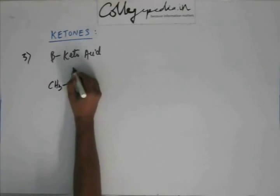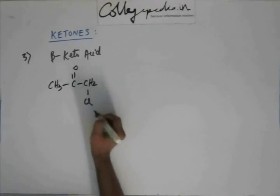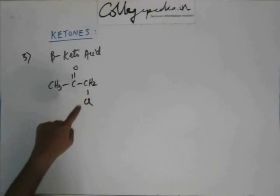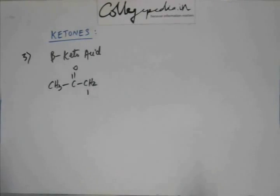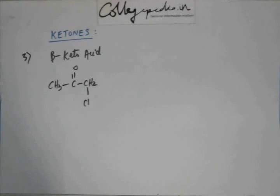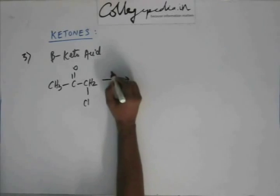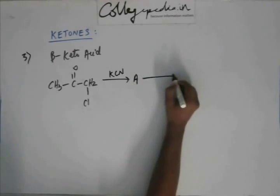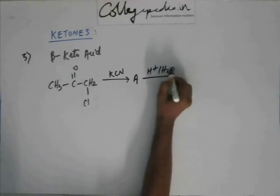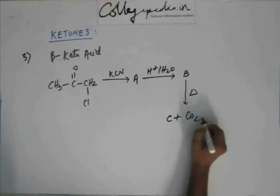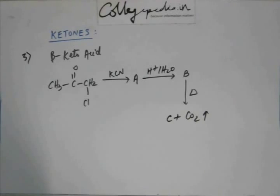Suppose I give you a reactant — from a ketone we can produce this, meaning one hydrogen of the ketone can be replaced by chlorine. Now this is a reaction we will study later. For now, on this reactant I add KCN, I get A. Then I add H+ and H2O on A, I get B. I heat B and I get C, and CO2 gas is evolved. Identify A, B, and C.